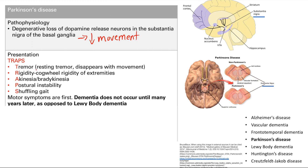TRAPS: R is rigidity — cogwheel rigidity of the extremities, where there's resistance and the limb moves in small increments like a cogwheel. A is akinesia or bradykinesia — slowing of movement, as if everything is in slow motion or moving through water. P is postural instability — push them and they fall down, very imbalanced. S is shuffling gait. That's TRAPS — everything you need to know about their symptoms.